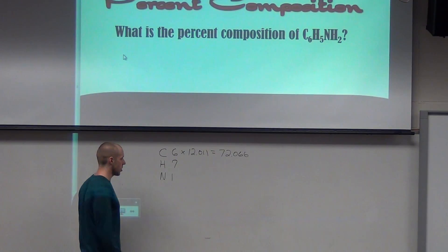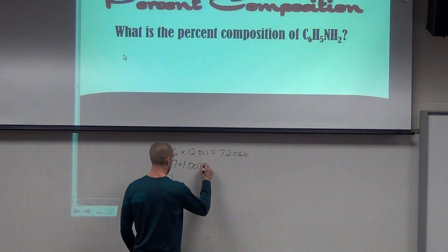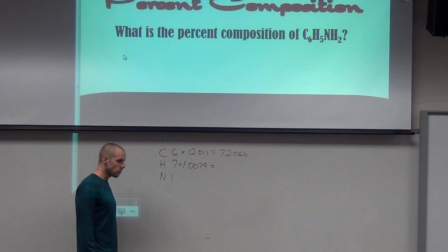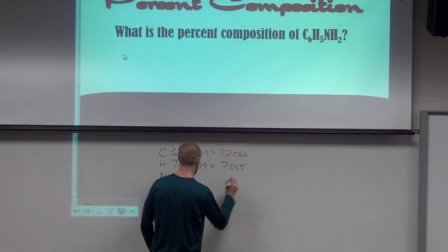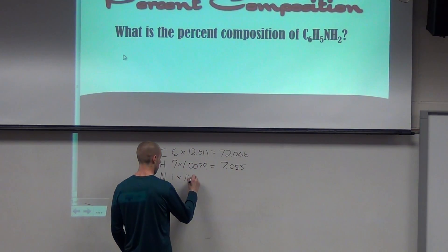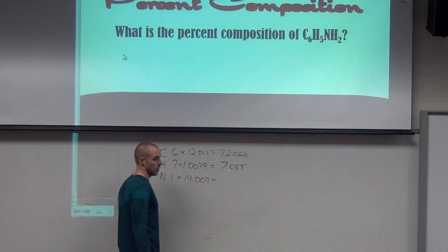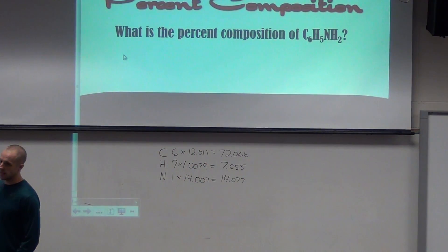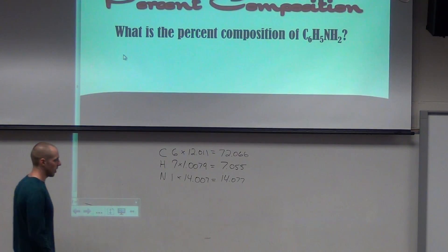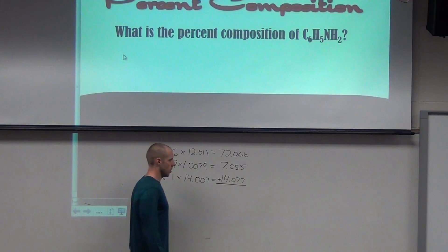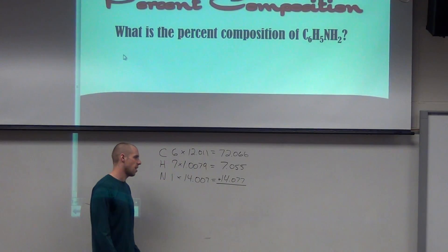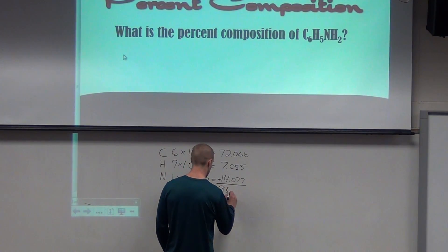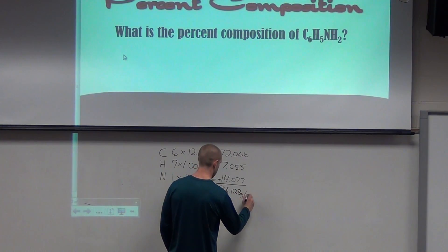In this first step, all we're doing is multiplying to find the molar mass contribution. We take 6 times 12.011 and get 72.066 — that's the mass carbon contributes to this compound. Then hydrogen: 7 times 1.0079 gives us 7.055. And nitrogen: 1 times 14.007 gives us 14.007. When we add them all together, that gives us the total molar mass: 72.066 plus 7.055 plus 14.007 equals 93.128 grams per mole.